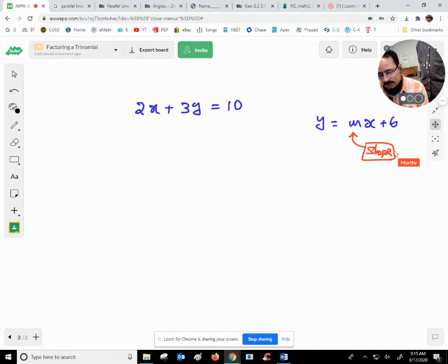But the given equation is not in the form of y equals to mx plus b. It's in the form of ax plus by equals to c, which is the standard form. Now I'm going to isolate y.